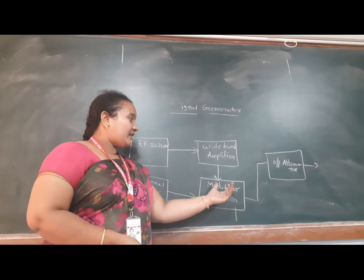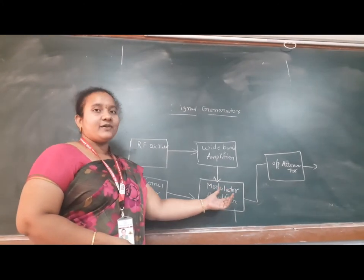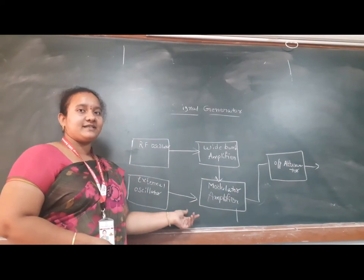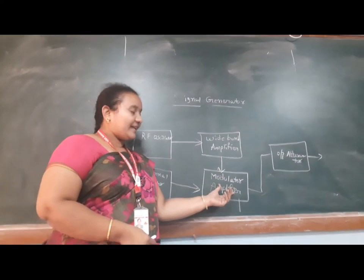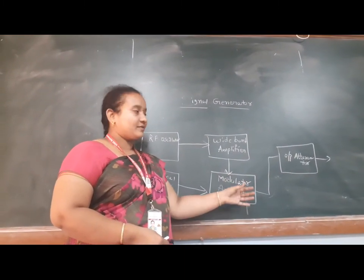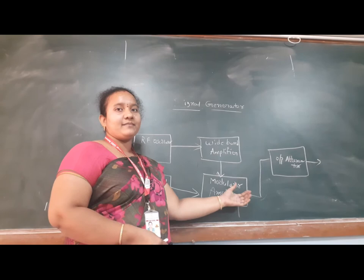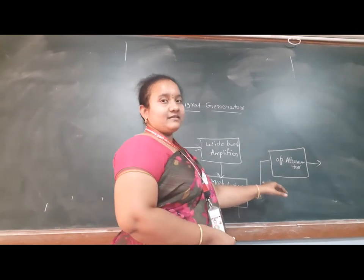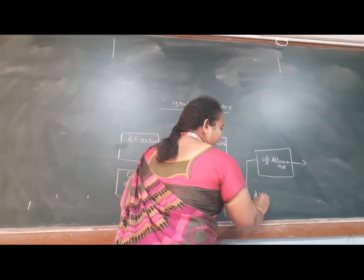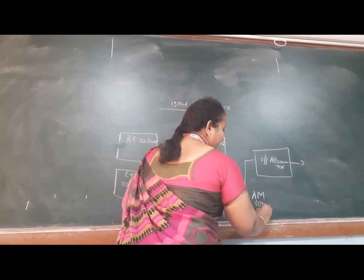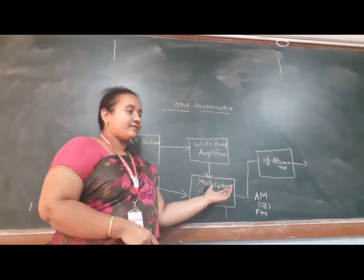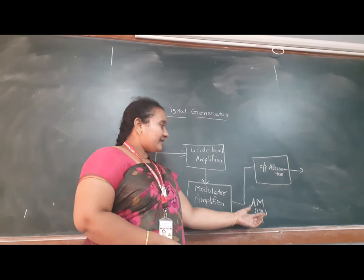The modulator amplifier uses the modulation process, which means it combines the carrier signal as well as the message signal. So we will get a modulated signal. Internally it also consists of an amplifier, so this modulated signal will be amplified and then generated as an output. Finally, we are getting either AM or FM output. After modulation, we will get the modulated output.